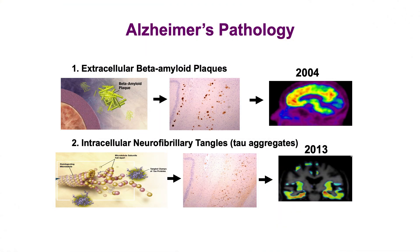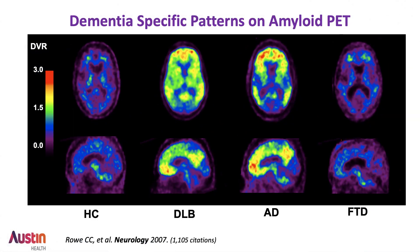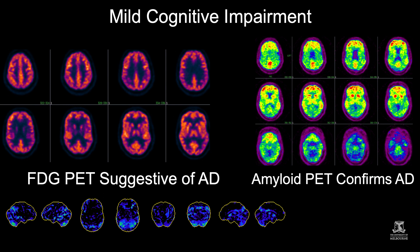We can also now image amyloid and tau plaques, the fundamental neuropathology of Alzheimer's disease. These are the patterns we see in Alzheimer's disease, second from the right. In frontotemporal dementia there's no amyloid plaque so you get a negative scan that looks like a normal study, and in dementia with Lewy bodies there are plaques of variable density with the same pattern as in Alzheimer's disease. Here, an FDG-PET shows some mild reduction in the parietotemporal cortex suggestive of AD, while the amyloid PET on the right is strongly positive and confirms the diagnosis. Amyloid PET is strongly positive at the onset of symptoms of Alzheimer's disease while FDG-PET may take a while to develop the full pattern.